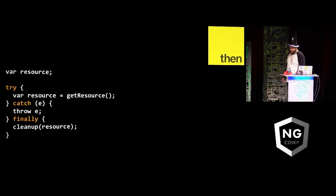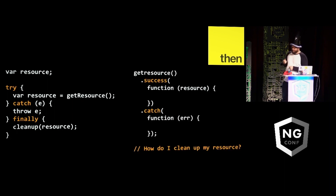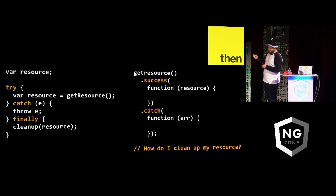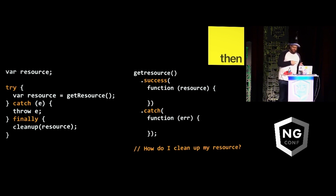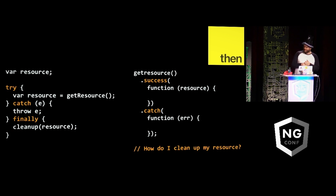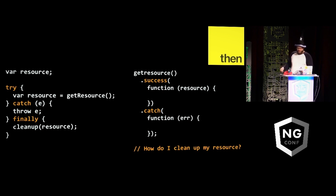Not only that, but there were also certain things missing from the spec as well — specifically, there is no finalization. So if you're trying to model something such as IO, which very much has a notion of cleanup at the very end, as well as any cancellation — like getting halfway through uploading a file and wanting to stop — promises as specified today do not have that solution.